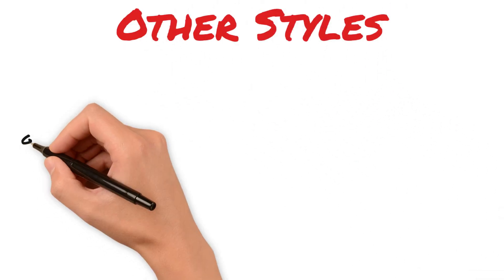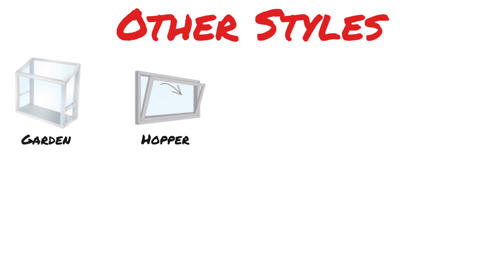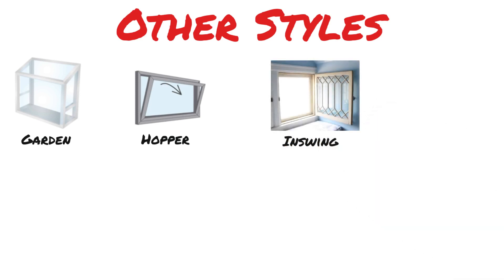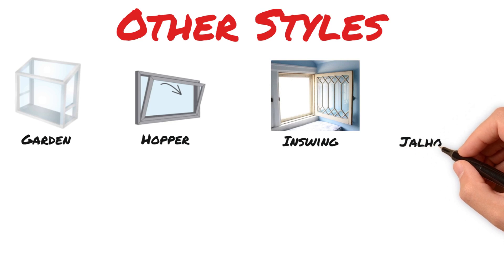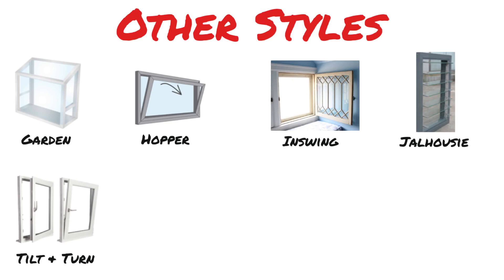Let's look at some other windows that are not as common. A garden window has a glass roof and sides, which requires different drainage than a typical residential house window. The next is a hopper window, which opens into the home and is not very common in Canada. The same goes for an in-swing window, which would be quite inefficient in our climate. A jalousie window you won't find in many homes, but you may find in some older trailer homes. Tilt-and-turn windows are more of a European style and are not that popular due to efficiency requirements in our weather.